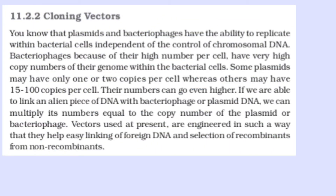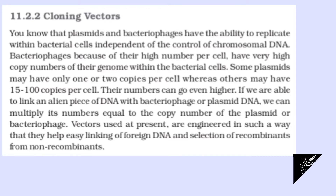Tools of Recombinant DNA Technology: Cloning Vectors. Plasmids and bacteriophages have the ability to replicate within bacterial cells independent of the control of chromosomal DNA. Bacteriophages, because of their high number per cell, have very high copy numbers of their genome within the bacterial cells. Some plasmids may have only 1 or 2 copies per cell, whereas others may have 15 to 100 copies per cell, and their numbers can go even higher.